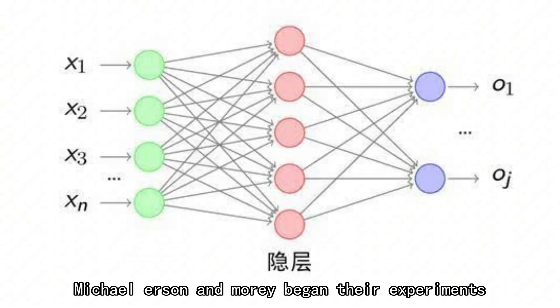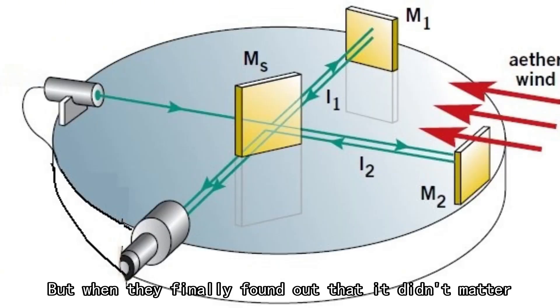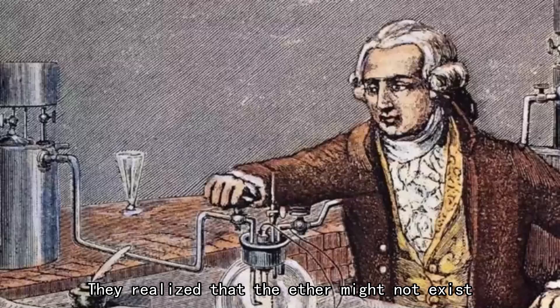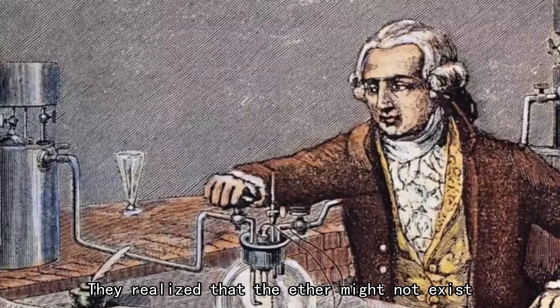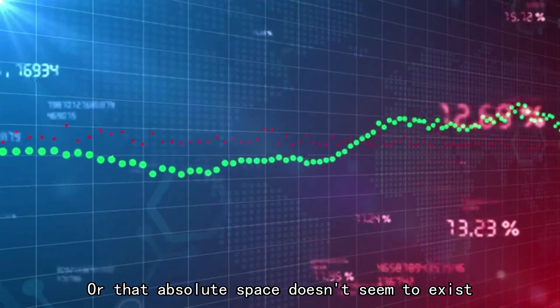But when they finally found out that it didn't matter, no matter how you measure the speed of light, it's the same. They realized that the ether might not exist, or that absolute space doesn't seem to exist.